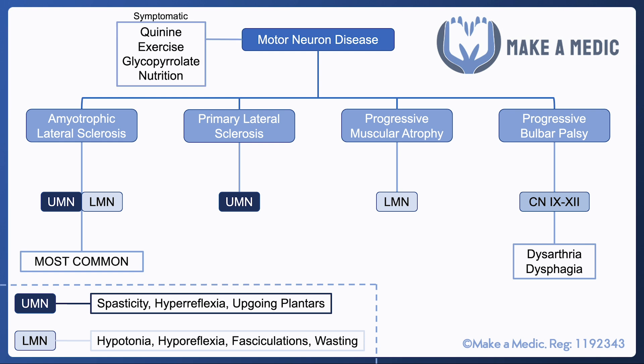Regarding the management, this is a chronic progressive neurodegenerative disorder that is very hard to treat, and a lot of it does focus around trying to manage symptoms as best as possible. So quinine for muscle cramps, glycopyrrolate for excessive secretions, and improving and optimizing their exercise and nutrition are very important measures to take.